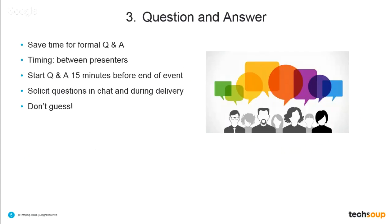When you have multiple presenters, a good place to have Q&A is at the transition between presenters, so the context of the question is still fresh in your mind. Sometimes learners will chat in questions that don't reference the actual statement the presenter made, and if you wait until the end of the event you might not remember what it was about. So doing Q&A in between presenters or at the end of a particular subject ensures you fully understand what participants are asking.